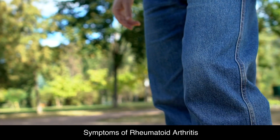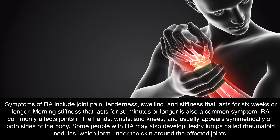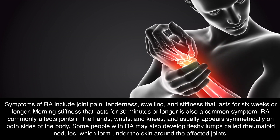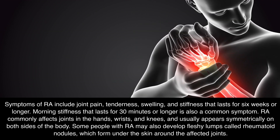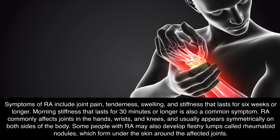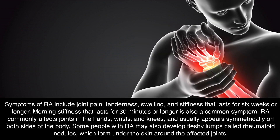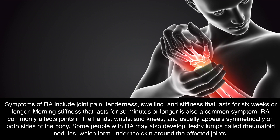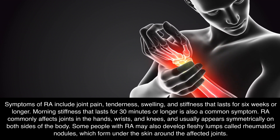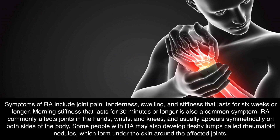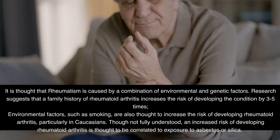Symptoms of Rheumatoid Arthritis include joint pain, tenderness, swelling, and stiffness that lasts for 6 weeks or longer. Morning stiffness that lasts for 30 minutes or longer is also a common symptom. RA commonly affects joints in the hands, wrists, and knees, and usually appears symmetrically on both sides of the body. Some people with RA may also develop fleshy lumps called rheumatoid nodules, which form under the skin around the affected joints.